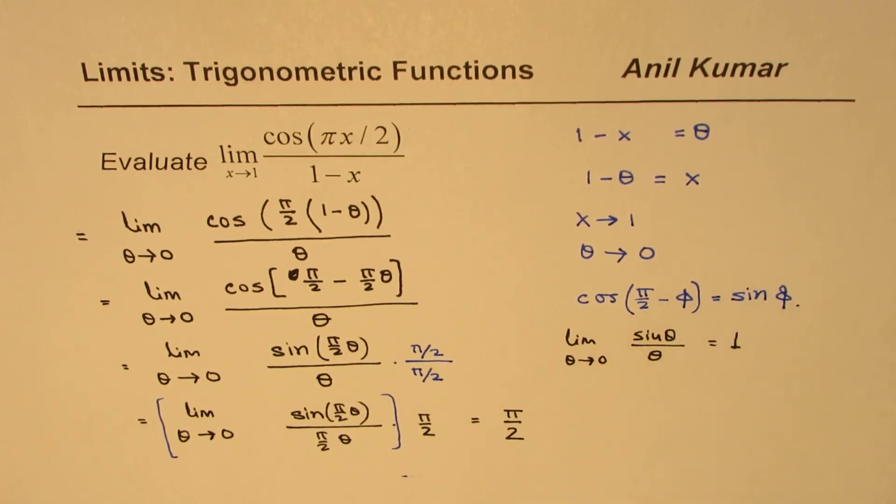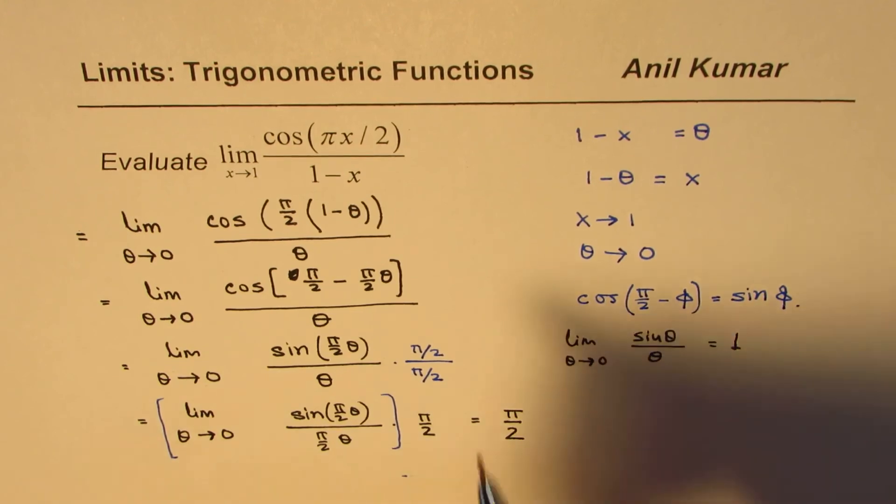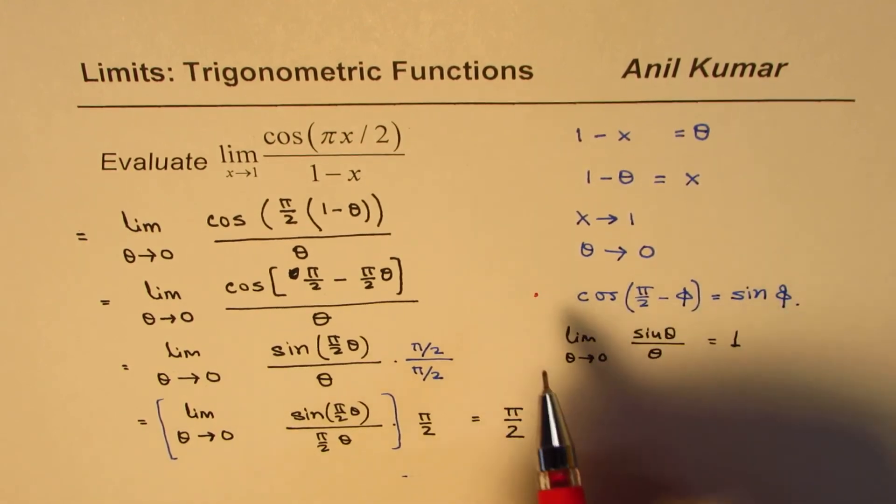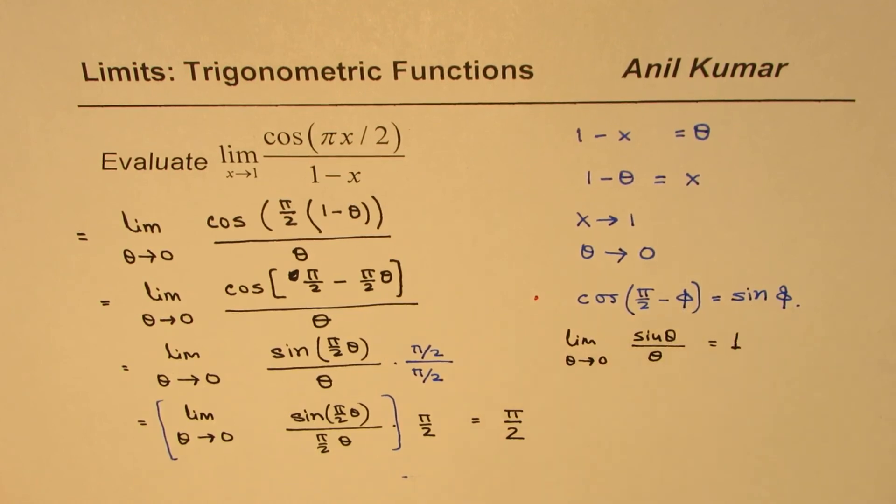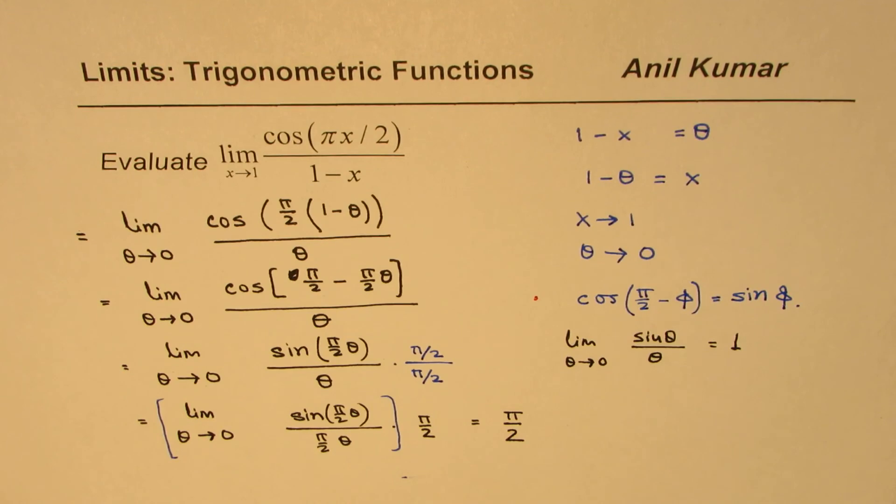And then another thing which we recalled was an identity, how cos(π/2 minus any angle) is related with sine of that angle. Once you use these two things, it becomes simpler. I am Anil Kumar and I hope that helps.